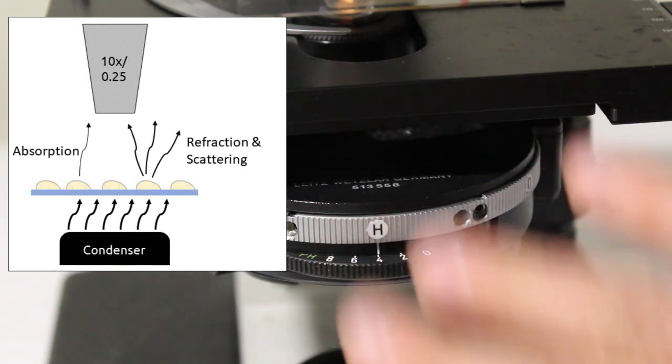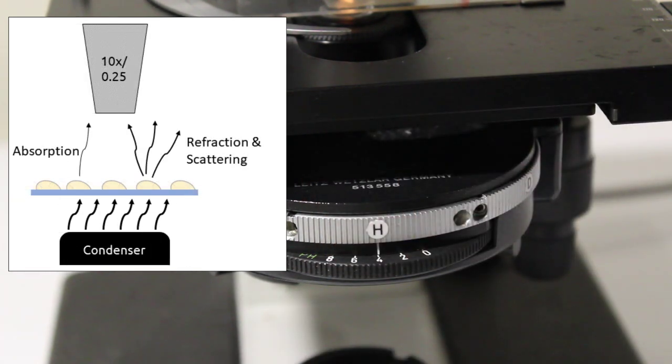Now this whole entire imaging system, wide field imaging, is based on either the absorption of light by the sample or by the refraction of light by the sample. But a lot of biological samples are basically bags of water and they don't have a lot of color or a lot of refraction to make them easy to see and so there's approaches to get around that.